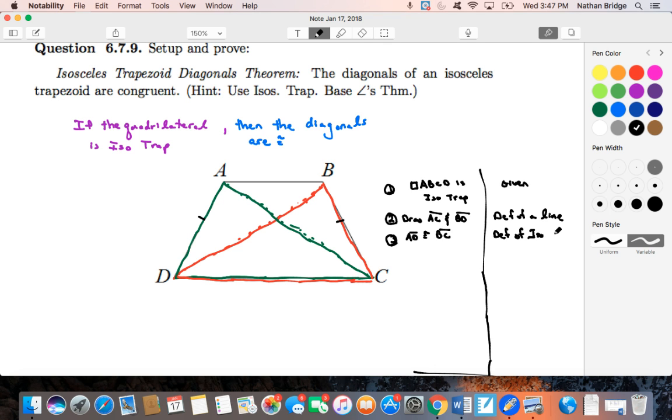Excuse me, an isosceles triangle. Look at, I got distracted. An isosceles trapezoid.